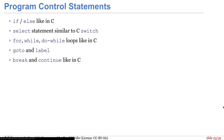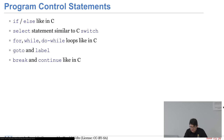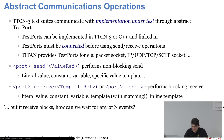Dann will man Programme schreiben – das ist im Wesentlichen wie C. Es gibt If/Else, Select als Switch-Statements, For-Loops, While-Loops, Do-While-Loops, Goto und Label. Für einen C-Entwickler ist das alles sehr ähnlich, mit Break und Continue und allem, was man kennt.